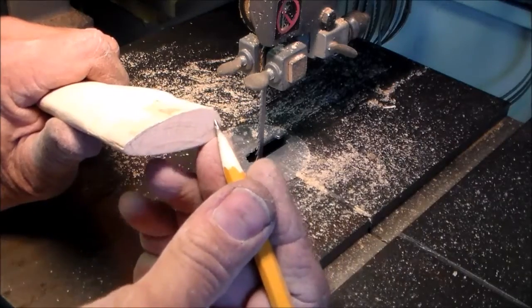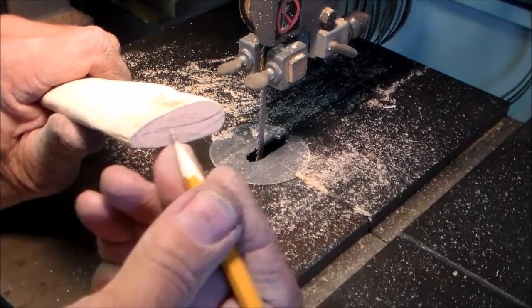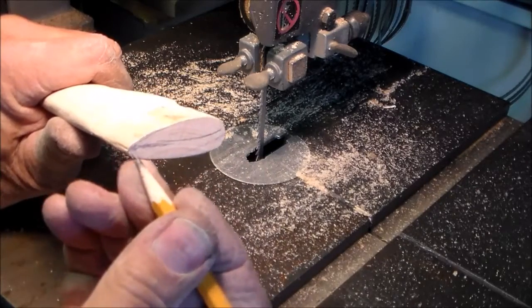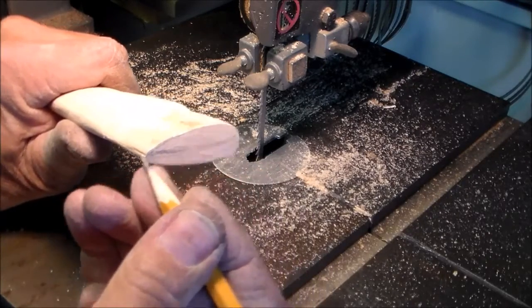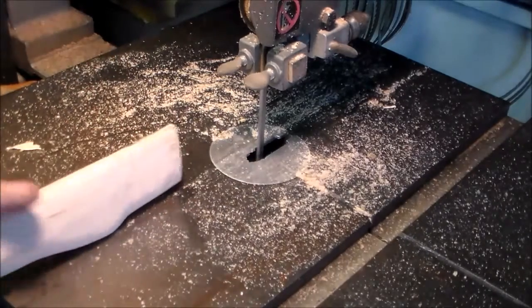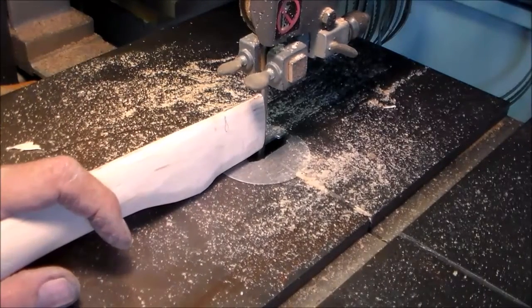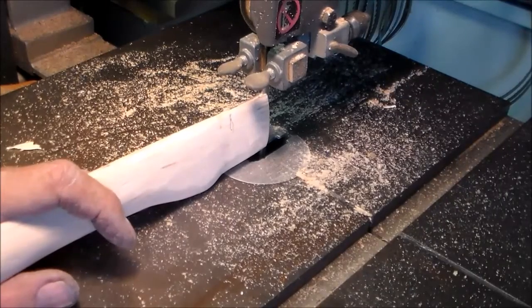You need to cut a slot in the end of this handle to take a wooden wedge. Make sure this slot that you cut does not go below the hammer or axe head.